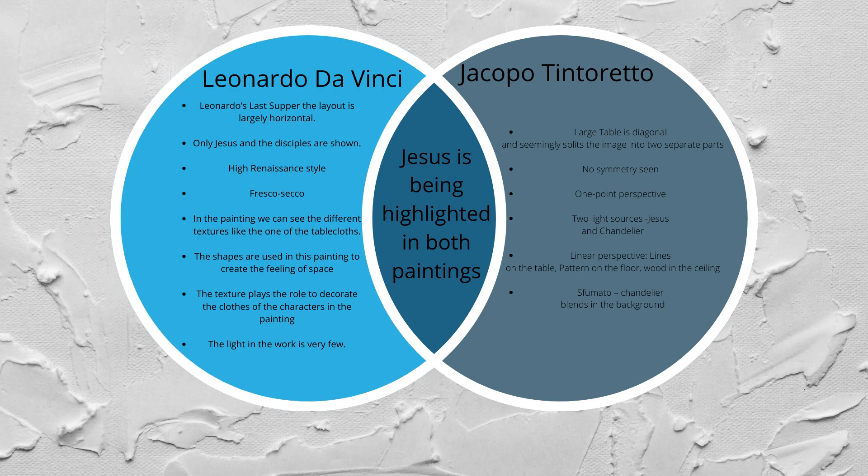The shapes in Leonardo's painting create fitting space, including squares and rectangles from the architectural elements. Lines in the background create space, a sensation of depth, and scale. Texture plays the role of decorating the clothes of the characters, using the illusion of texture even on the walls and the tablecloth. The light in the work is very minimal — it is more like a dark space with a lot of shadows, and dark values were heavily used.